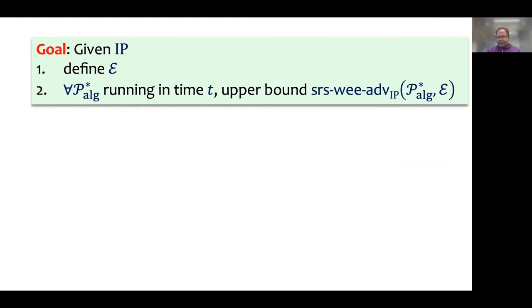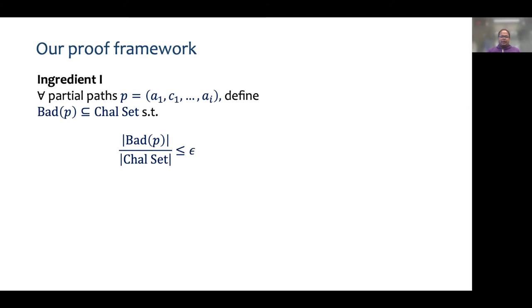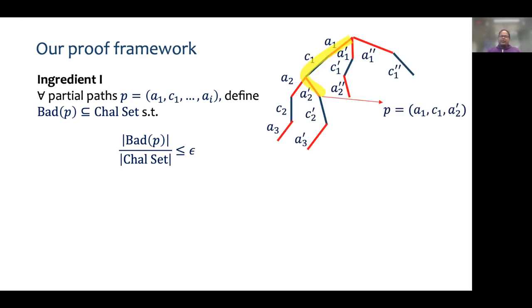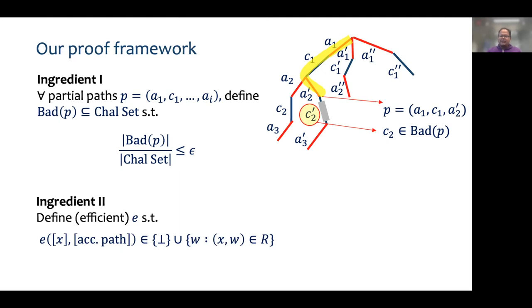In our paper we have results for both notions, but I will focus on the adaptive version for this talk. Our goal is: given an interactive protocol, we define an extractor and prove an upper bound on the state restoration witness extended emulation advantage of any algebraic cheating prover running in time t. Our framework is composed of two main ingredients. First, for all partial paths in the execution tree, we define a set of bad challenges, and we show that there is some epsilon such that for any partial path, at most an epsilon fraction of the challenges are bad. Second, we define an efficient function e, which takes an accepting path and the instance as input and returns either bottom or a witness for the instance.